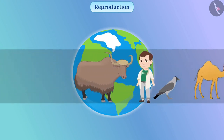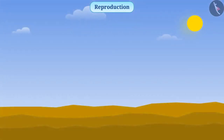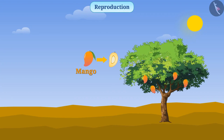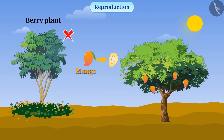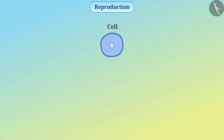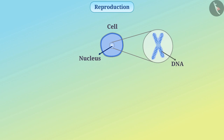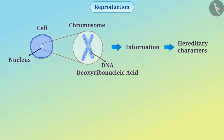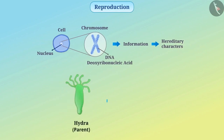Let's talk about important parameters of reproduction. You must know that a seed of mango produces a mango tree — it does not produce a berry plant. The body of every organism is made up of cells that consist of a nucleus containing DNA. Every cell contains a nucleus which is made up of chromosomes. The chromosomes contain DNA — deoxyribonucleic acid — that contains information of hereditary characters transmitted from parent to offspring.